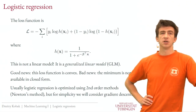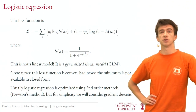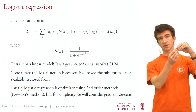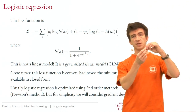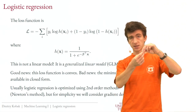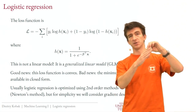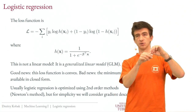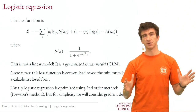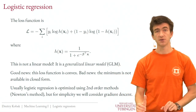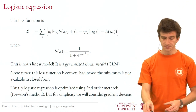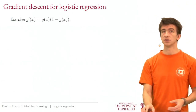In practice, so-called second-order methods are usually used to optimize logistic regression. Unlike gradient descent which only uses the first derivative, second-order methods also compute the second derivative of the loss with respect to beta and use that to choose the step size. I mention this briefly since it didn't come up before. Here, for simplicity, we'll use gradient descent to solve it.